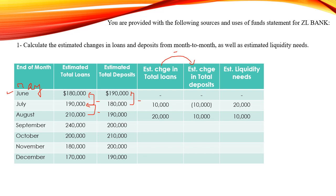Regarding the month of August, it is 210 thousand minus 190 thousand, giving a change in loans of 20 thousand. We should fill all the columns in the same way for the remaining months.